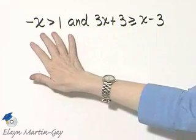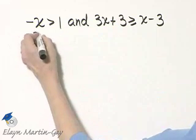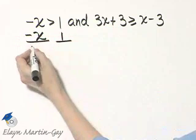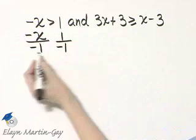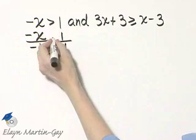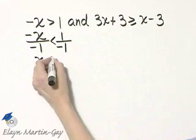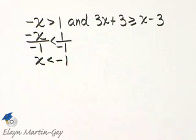So let's solve this inequality. I will solve it by dividing both sides by the coefficient of x, which is negative 1. Then, because I'm dividing by a negative number, I reverse the direction of the inequality sign and I have x less than negative 1.